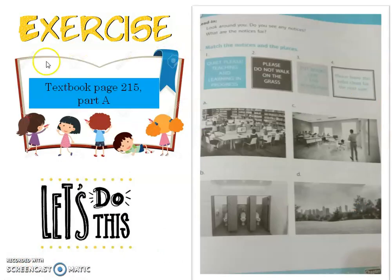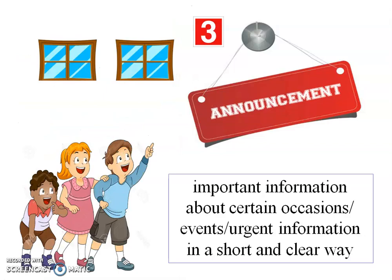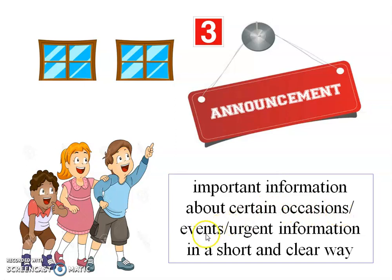This is your exercise: textbook page 215, part A — only part A. And the last but not least, it's about announcement. Announcement is important information about certain locations or events, presented in a short and clear way.